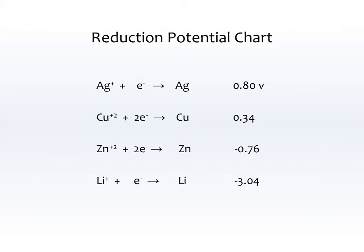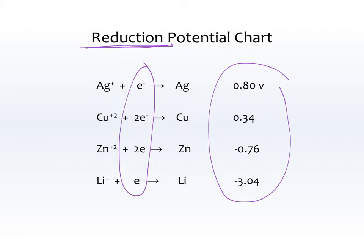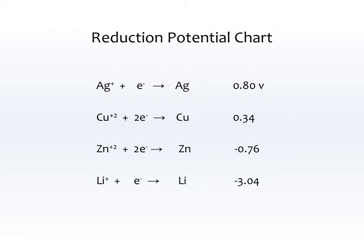That's how we analyze a redox reaction. Next, we're going to look at the reduction potential chart. This is very similar to the activity series from earlier in the year, except that all reactions here are written as reduction reactions — the electrons are on the left on every single one. The voltages show how many volts each substance would contribute to a battery if it were the thing being reduced. Silver contributes positive 0.8 volts, whereas zinc would take away 0.76 volts if it was the thing being reduced. The thing highest up on this list — silver — is the most easily reduced.